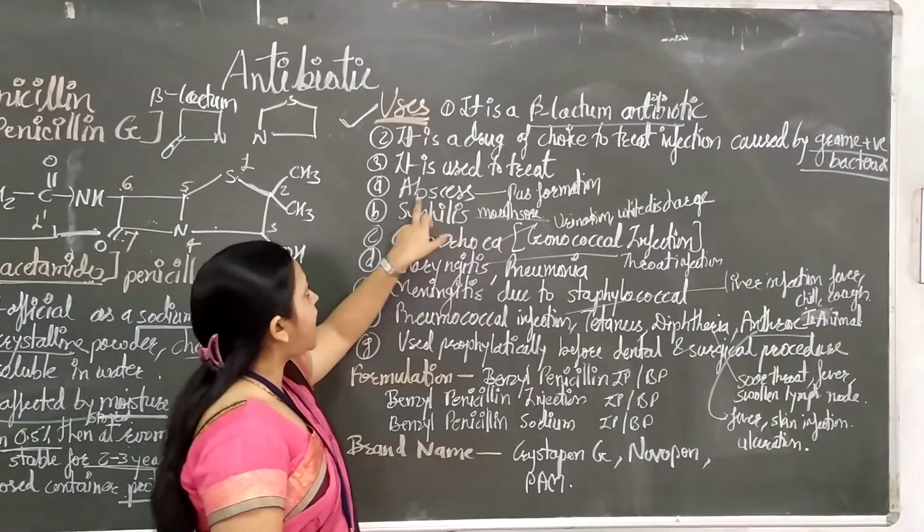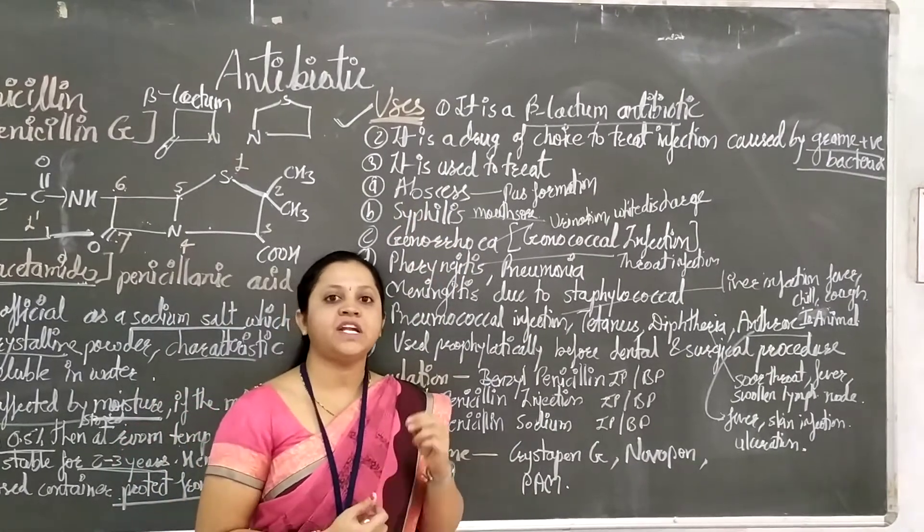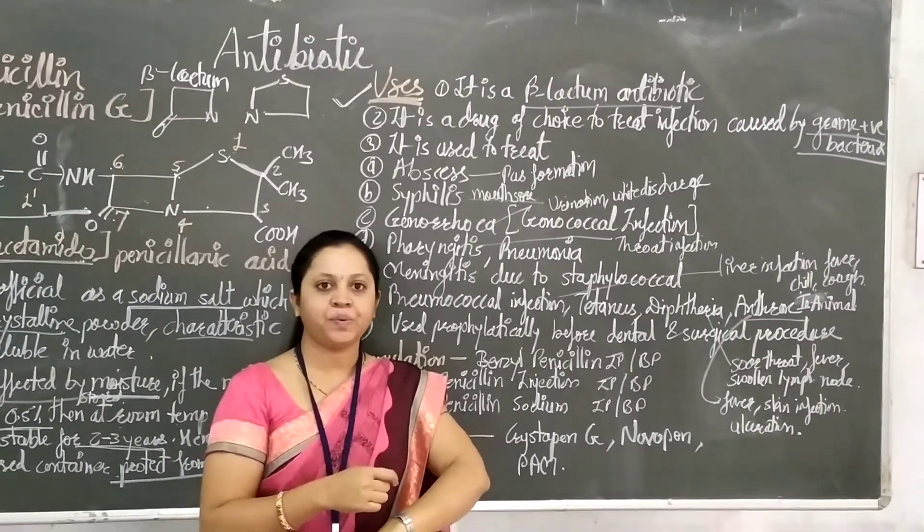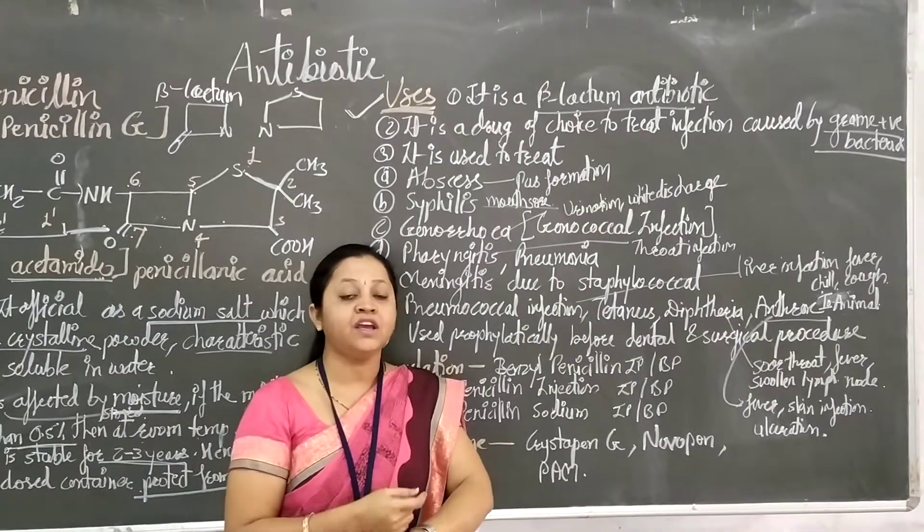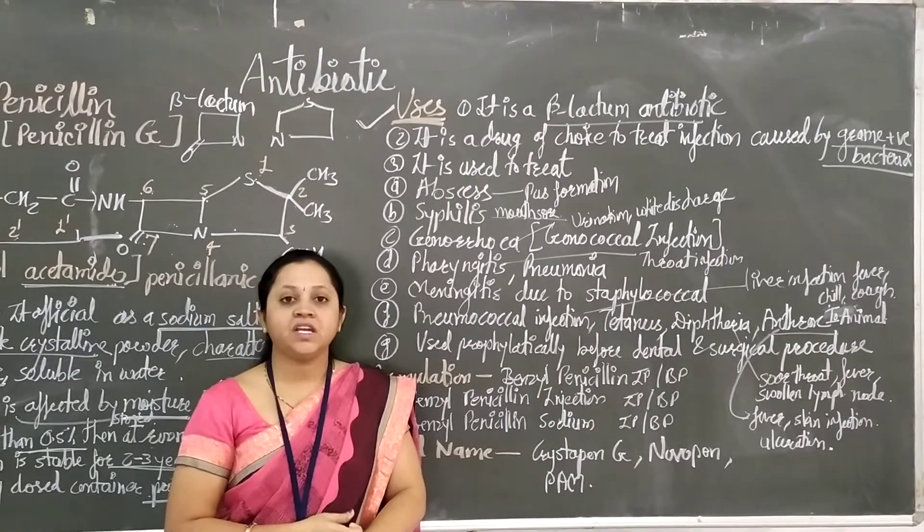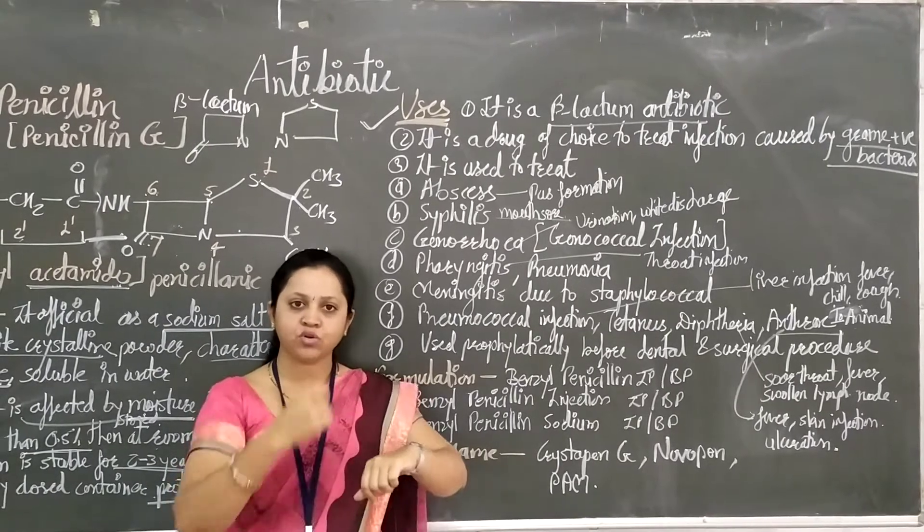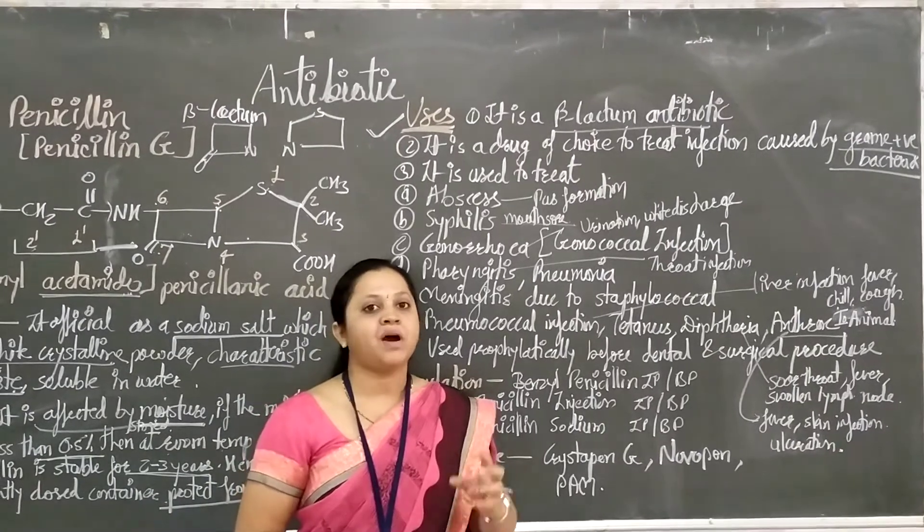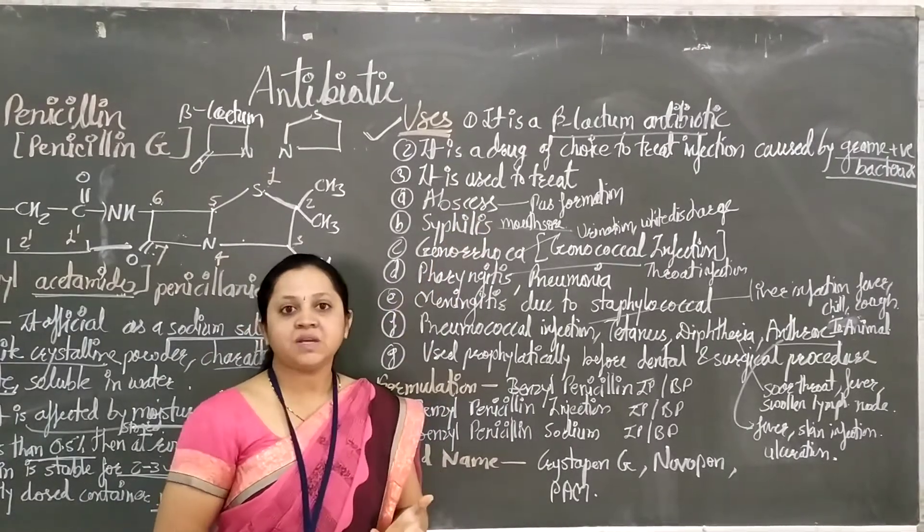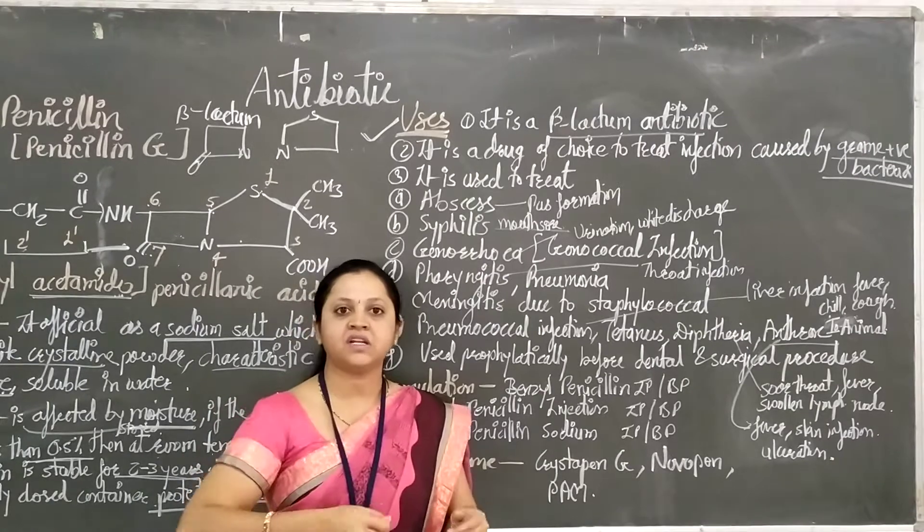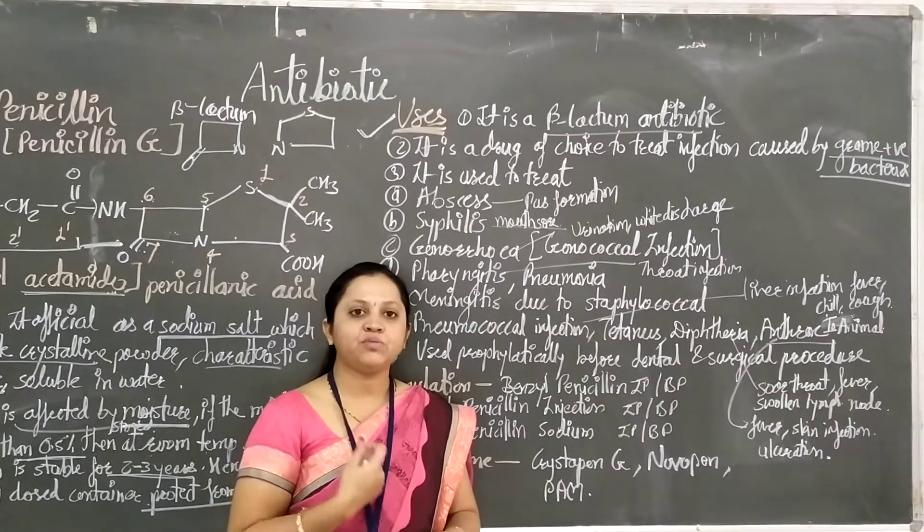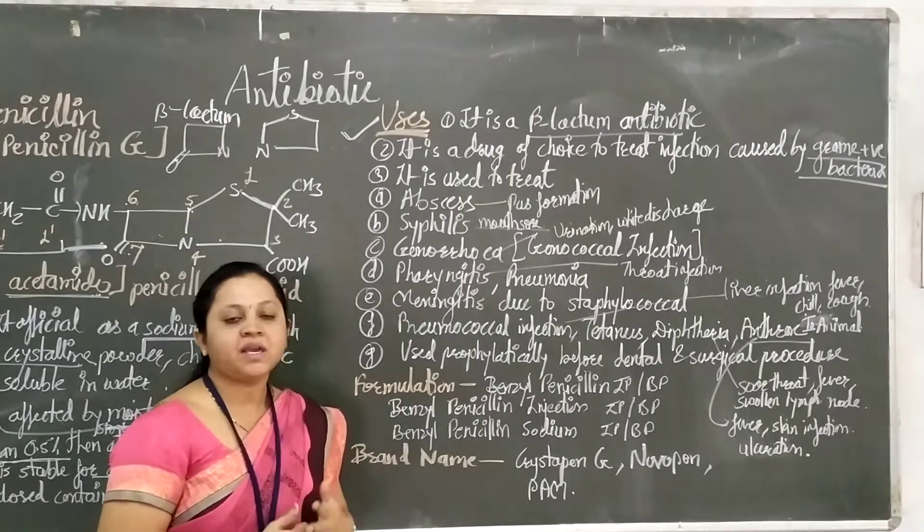The various infections we can treat: First, abscesses. Abscesses are pus formation. If you have a cut and don't take care of it, there's a wound on the skin. What happens? Swelling, redness, nodules, pus formation, fever - this is possible. If there's a cut, burn, or wound, and it becomes infected with redness, that is an abscess.